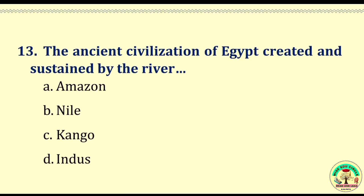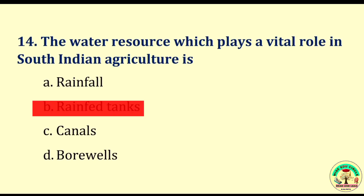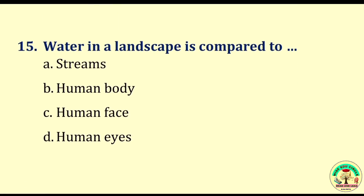Question number thirteen: The ancient civilization of Egypt was created and sustained by the river — Amazon, Nile, Congo, or Indus. The right answer is Nile. Question number fourteen: The water resource which plays a vital role in South Indian agriculture is — rainfall, rain-fed tanks, canals, or borewells. The right answer is rain-fed tanks. Question number fifteen: Water in a landscape is compared to — streams, human body, human face, or human eyes. The right answer is human eyes.